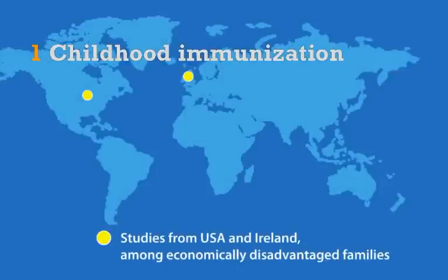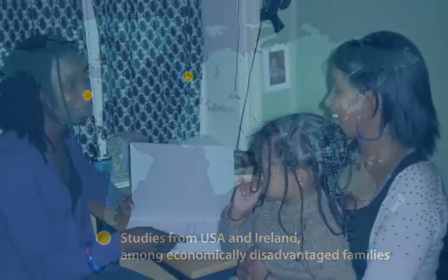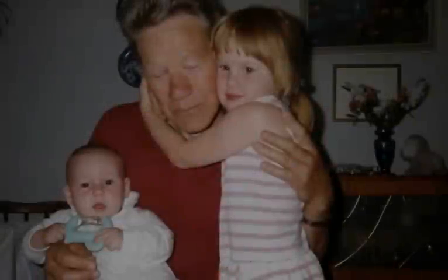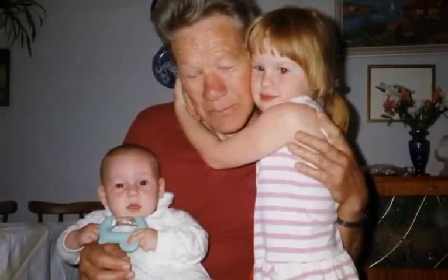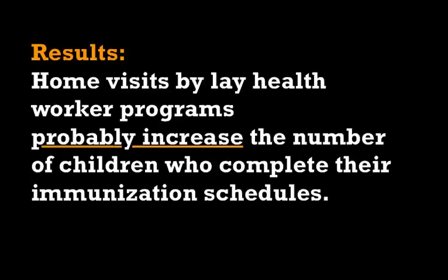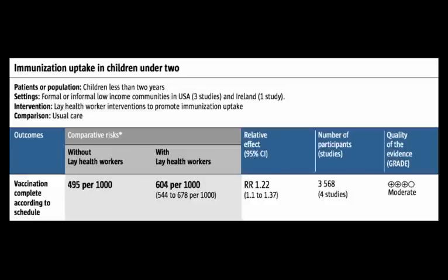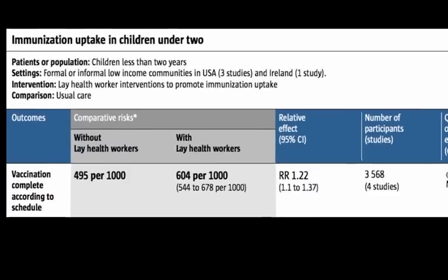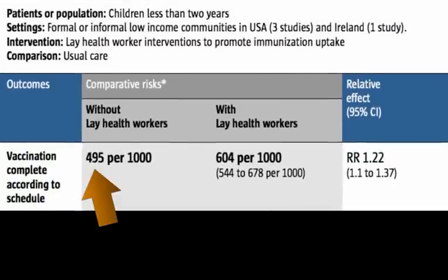The trials that focused on immunization were from the USA and Ireland among economically disadvantaged families. The lay health workers visited families with children under the age of two in their homes and gave them information about the importance of vaccinating their children and encouraged them to visit clinics to get this done. These families were compared to families who received no such visits. The trials conclude that home visits by lay health worker programs probably increased the number of children who complete their immunization schedules. Among 1,000 children not visited by lay health workers, 495 were vaccinated according to schedule, but in the group where lay health workers paid visits, 604 children were vaccinated — an increase of over 100 children.